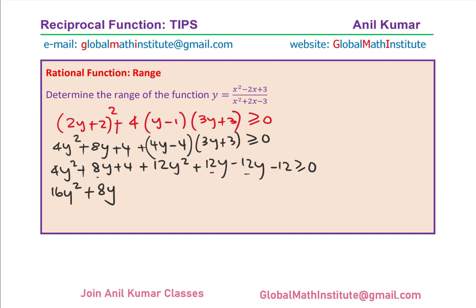The constant terms, we have 4 and minus 12, which means minus 8 should be greater than or equal to 0. So we can factor out 8 from here. We get 2y square plus y minus 1 greater than or equal to 0. So we have 2y square plus y minus 1 greater than 0, which can be written as, let me just draw a line here, continue this side. Let us change the ink also, so it is 8 times, you could factor this as 2y minus 1.